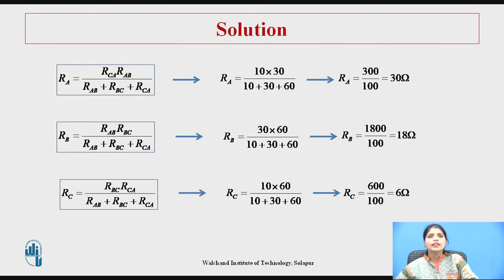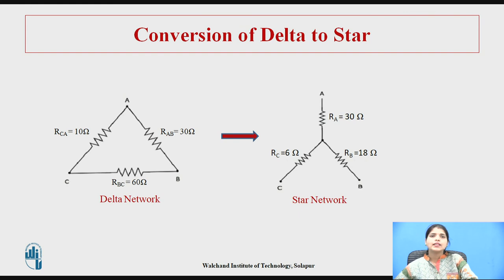We get the arm values of the star network: R_A equals 30 ohms, R_B equals 18 ohms, and R_C equals 6 ohms. In this way we convert a delta network to a star network. At the end of the example, you should draw both the original delta network and the resulting star network with calculated values.